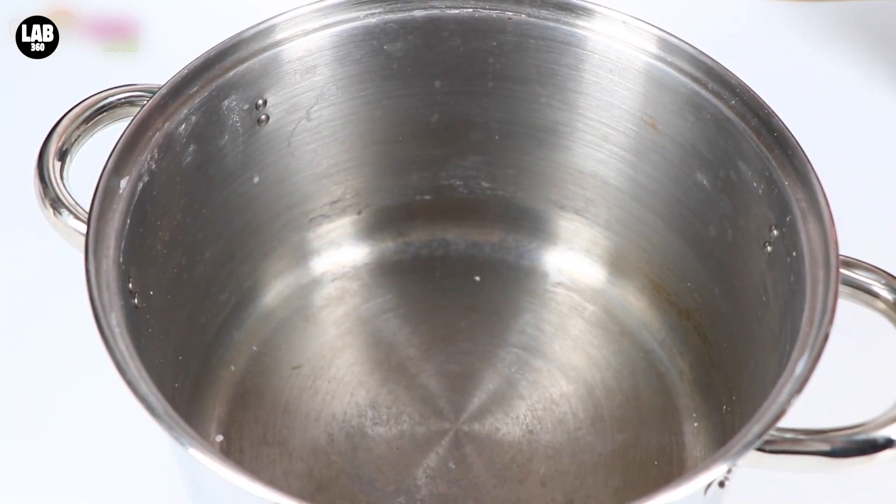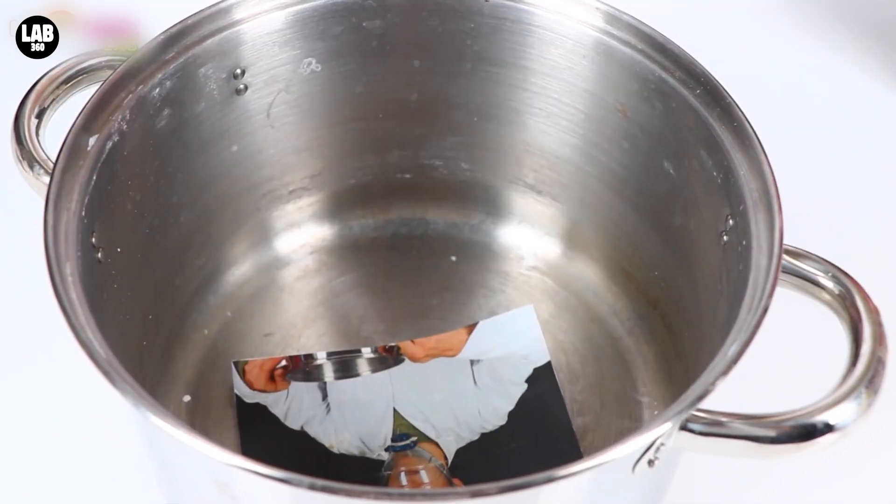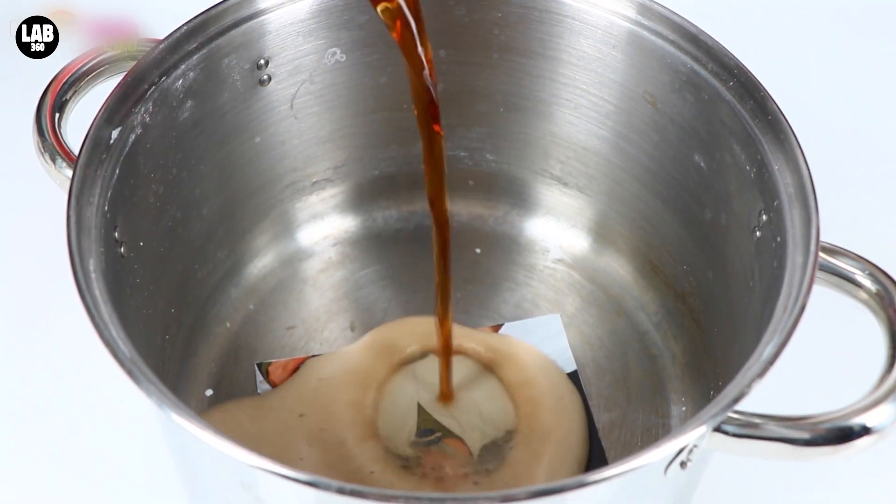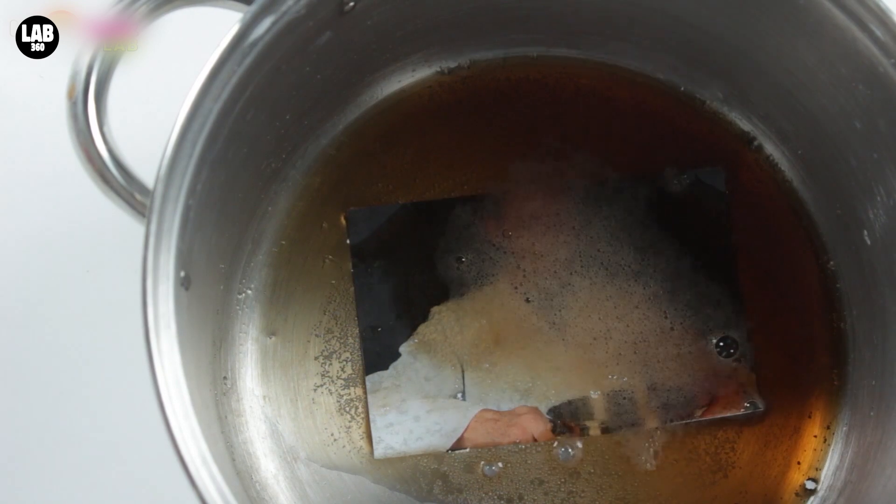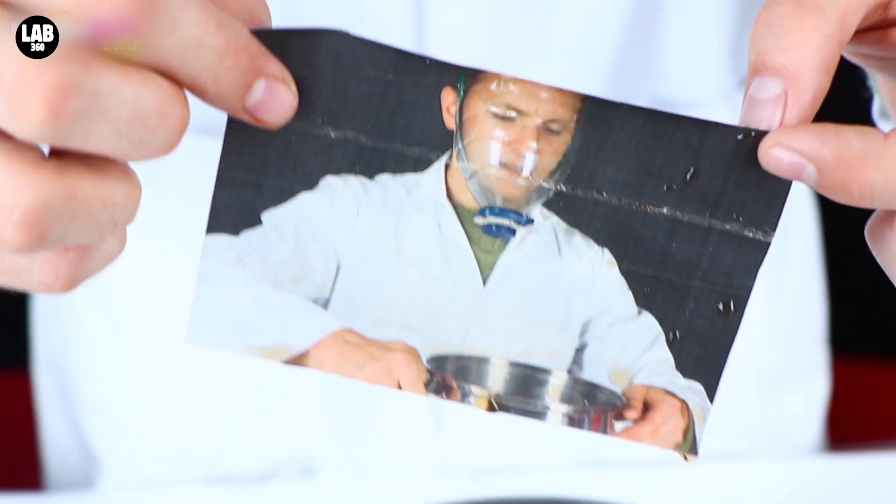Grab a photo of yourself, like this one of me performing the DIY gas mask experiment. Pop it in the pan and cover it in Coke. Let it sit for a few minutes and then hang it out to dry and you'll end up with a really cool old-looking photo.